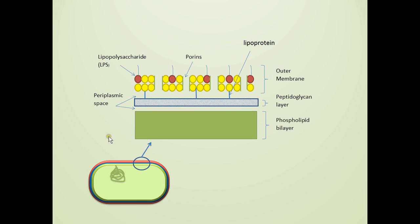The typical gram-negative bacterium has three parts to its cell envelope: the phospholipid bilayer (cell membrane), a thin layer of peptidoglycan, and then an outer membrane. The peptidoglycan layer is sandwiched between the two membranes, floating in an area referred to as the periplasmic space, and is anchored to the outer membrane using lipoproteins.